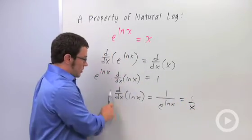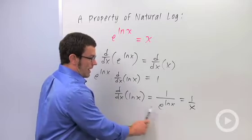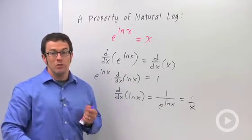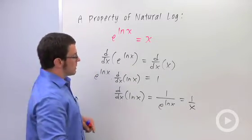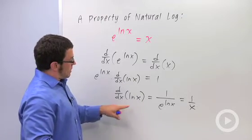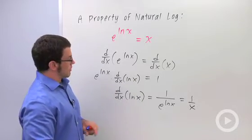What we just proved is that the derivative with respect to x of ln x is 1 over x. Now, we've been using this result for a while, but I don't think we proved it. So here's an actual proof of that derivative result.